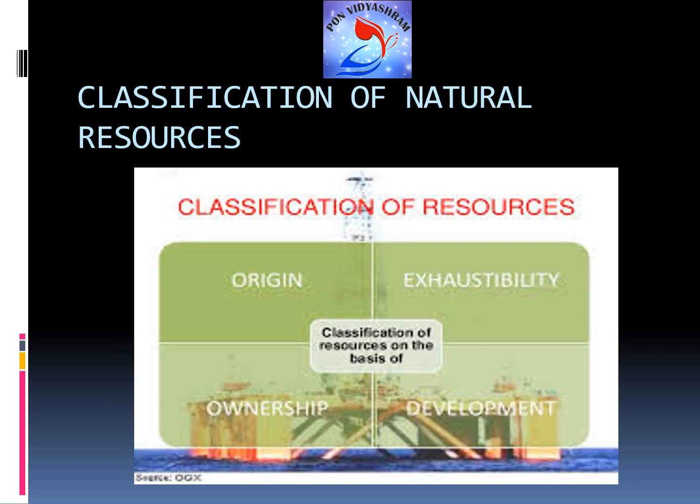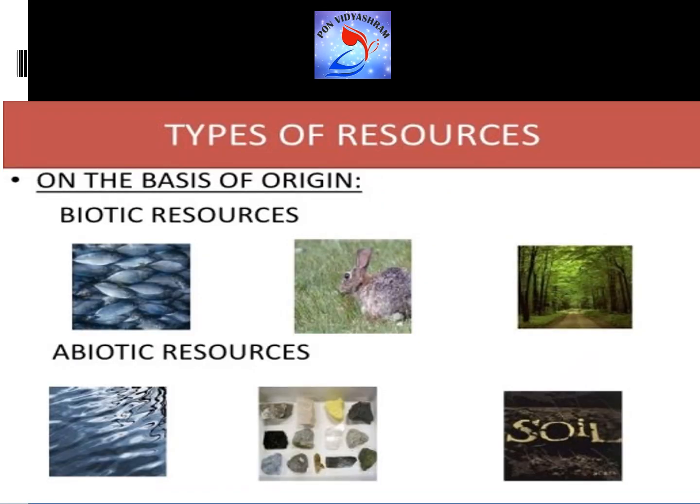The next topic is the classification of natural resources. The classification is on the basis of origin, exhaustibility, ownership, and development. On the basis of origin, resources are classified into biotic and abiotic. Biotic resources are obtained from the biosphere — all living things fall into biotic resources. Abiotic resources are composed of non-living things, for example soil and rocks.